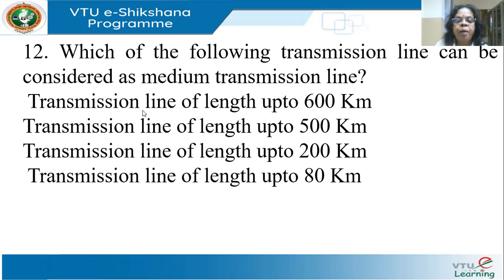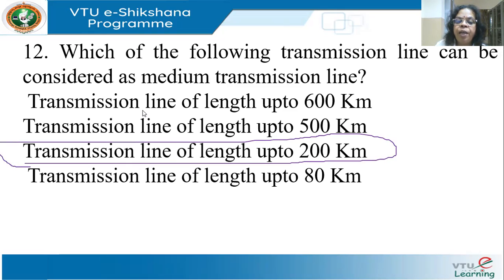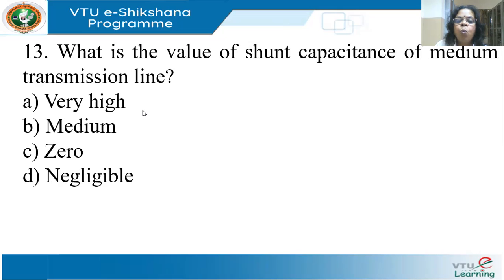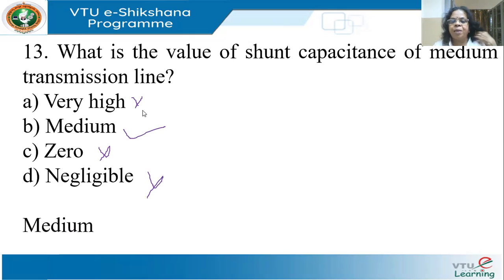Which transmission line can be considered a medium line? Medium lines are normally up to 200 kilometers. The justification: at 50 Hz, 200 × 50 = 10,000 — if length × frequency exceeds ~10,000, we use the long line model. Regarding the shunt capacitance of medium transmission lines: cables have the highest shunt capacitance, followed by long lines. The shunt capacitance of a medium line is medium — not negligible, but not very high.